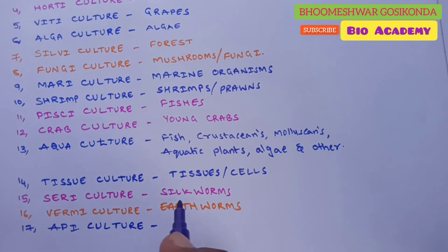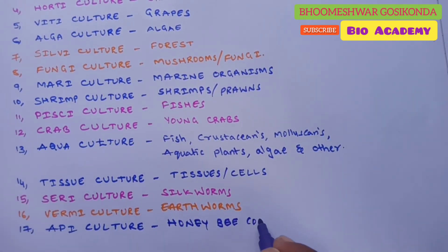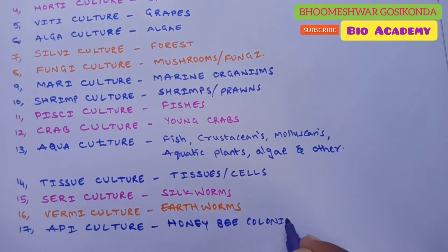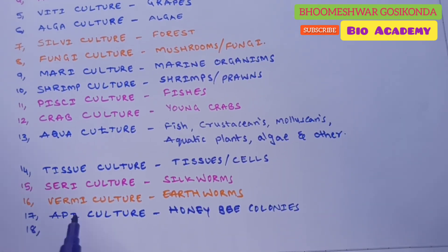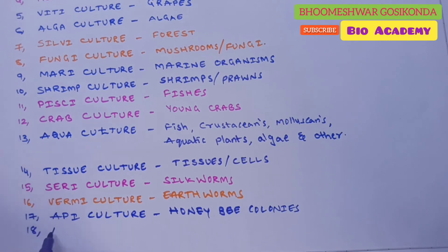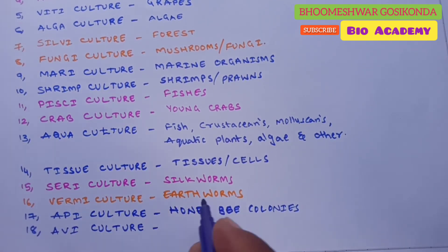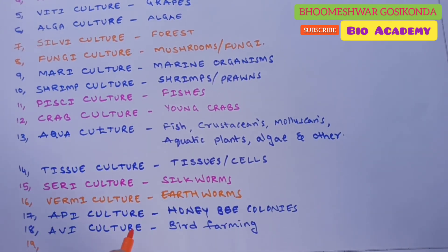Next is apiculture. Apiculture is the production of various types of honeybee colonies, in which each group has laborers, a queen, and drones. Next is aviculture, which is related mainly to the farming of birds.